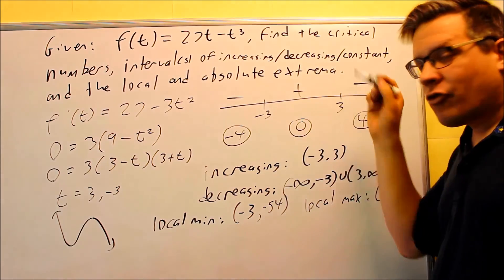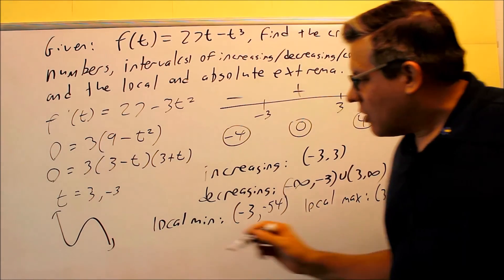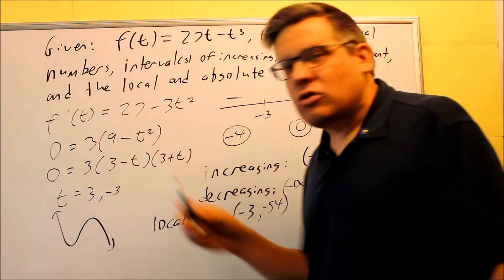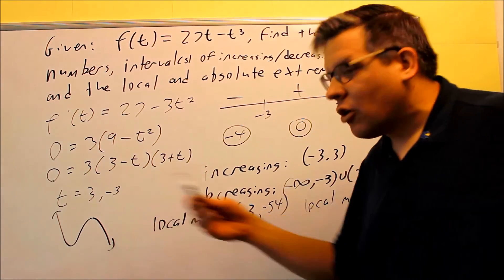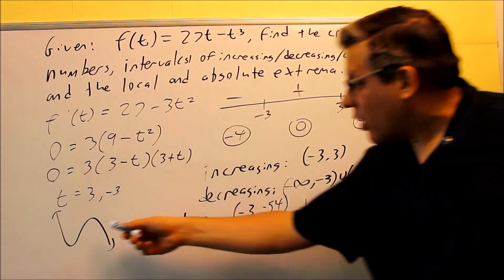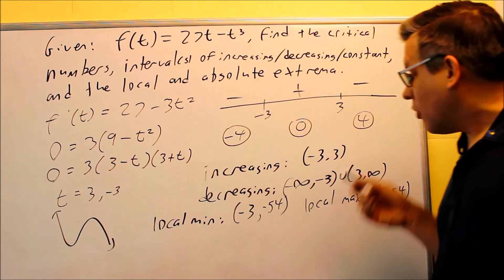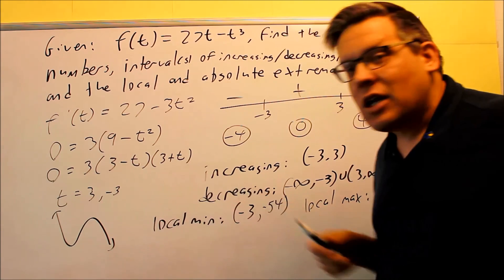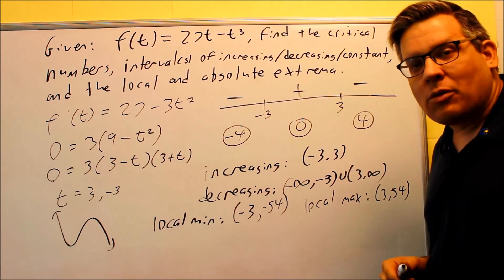We can also see that from our graph itself. So because of that, that means there's no absolute max and there's no absolute min. We have relative ones at these two spots here that we've already indicated already, but there's not going to be any absolute extrema on this particular problem.